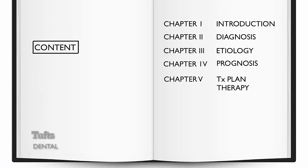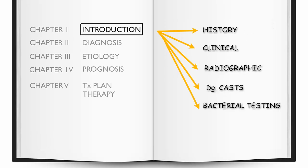We're going to start with the introduction, more information about diagnosis, etiology of the disease, prognosis, and we're going to end up with a suggested treatment plan and a rendered therapy. In terms of the introduction we're going to talk about medical and dental history, clinical and radiographic findings, what we identified with the use of the diagnostic cast, and because we are dealing with a periodontitis case, we did some bacterial testing as well.